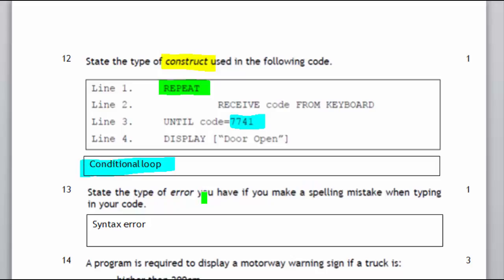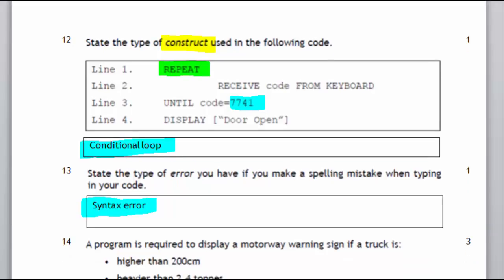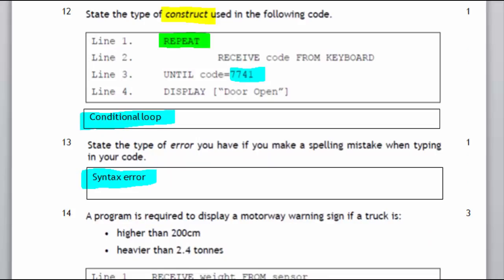Next wee question talking about there's a spell mistake in the code. If it's a spell mistake that's called a syntax error. So you've got something wrong with your syntax. So instead of saying print you might have said paint.